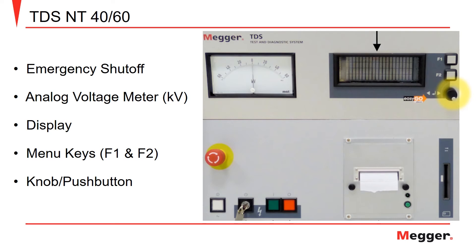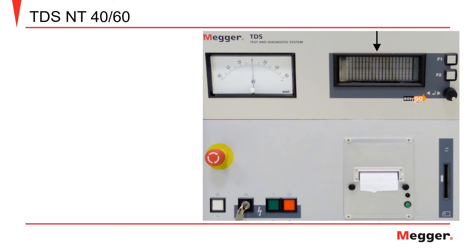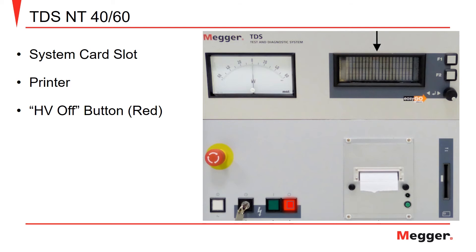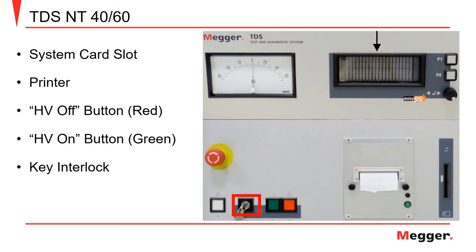User selections are made using the rotary selector knob and push button. The lower portion of the user interface features the system card slot, the onboard printer, red high voltage off button, the green high voltage on button, the keyed safety interlock, and the power button.